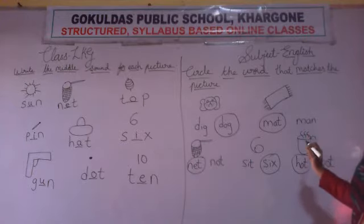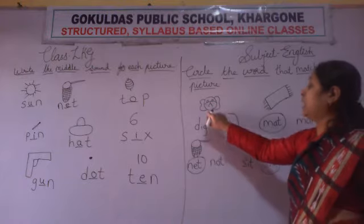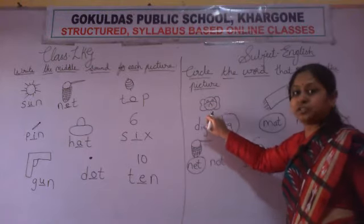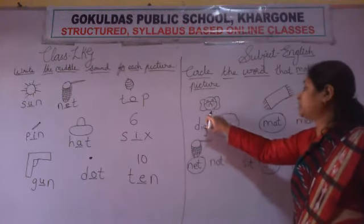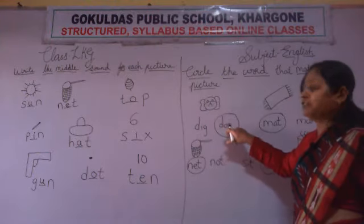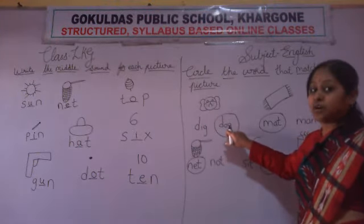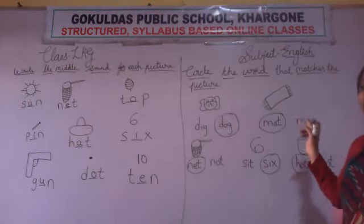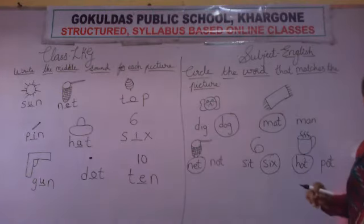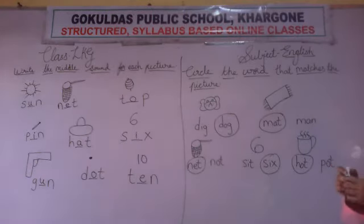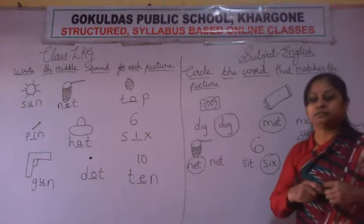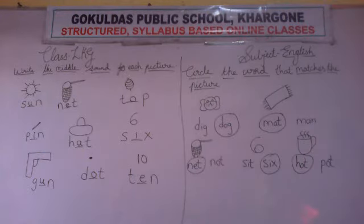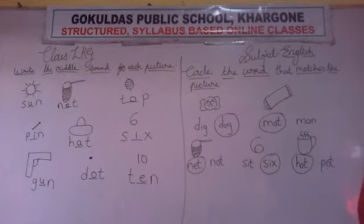So you understand this? What you have to do: you have to see the picture and identify it. After identifying the picture, you have to read the word aloud. Then you have to circle the word. Okay, so I am giving you 5 minutes — take a screenshot.